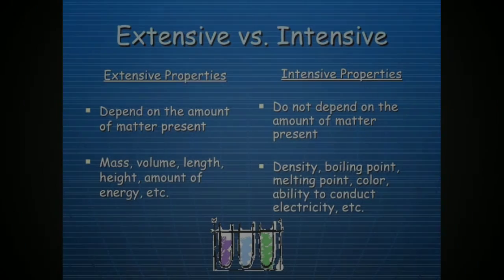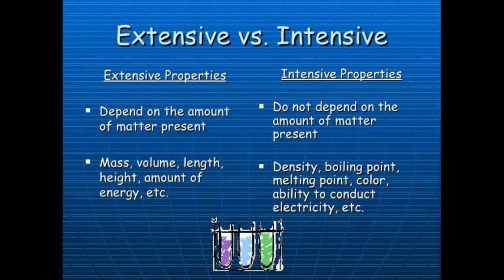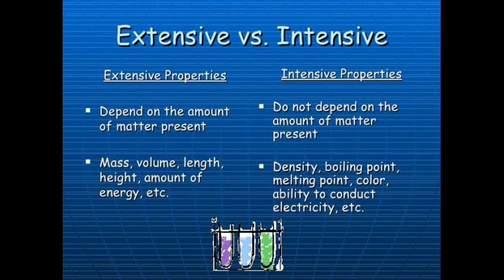Next, extensive versus intensive properties. Extensive properties are dependent on the amount of matter present. Intensive properties do not depend on the amount of matter present. Examples of extensive properties include mass, volume, length, height, and amount of energy. Examples of intensive properties include density, boiling point, melting point, color, and ability to conduct electricity.